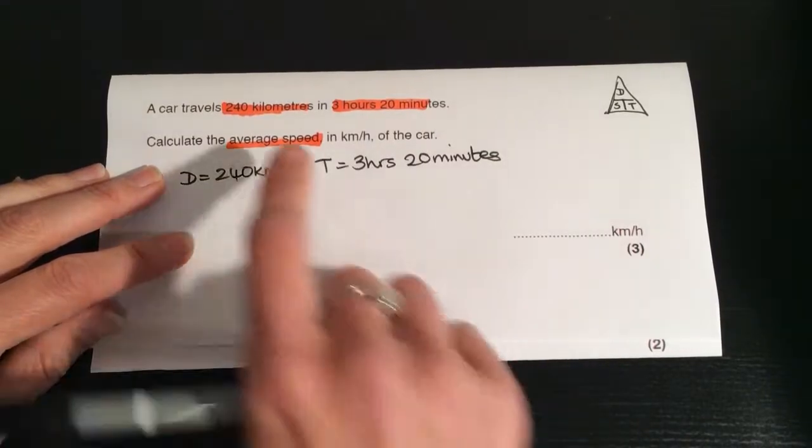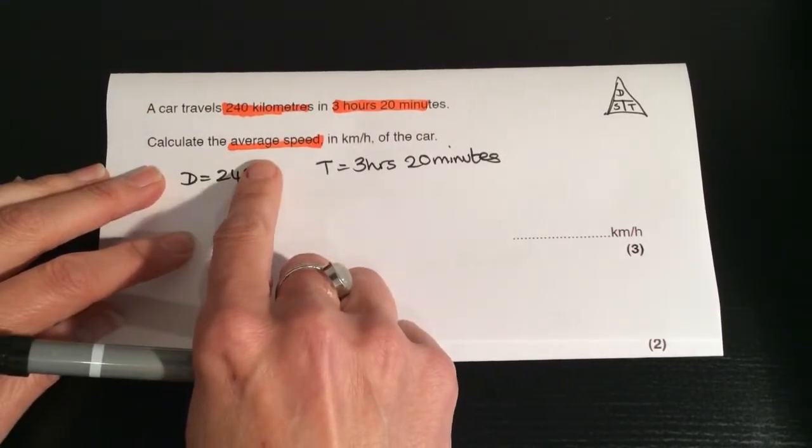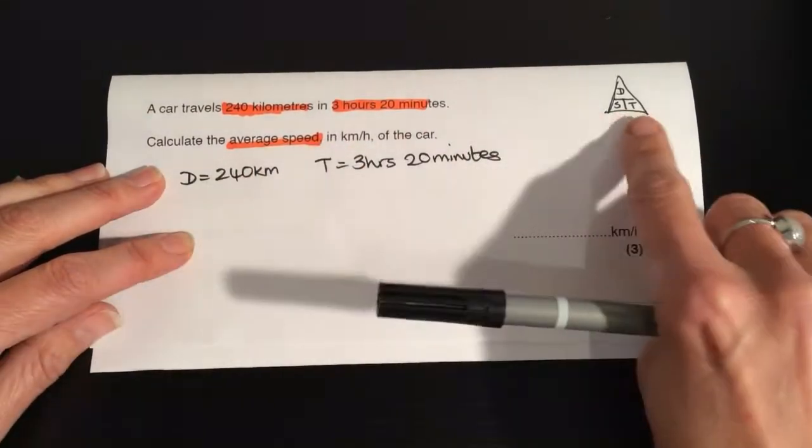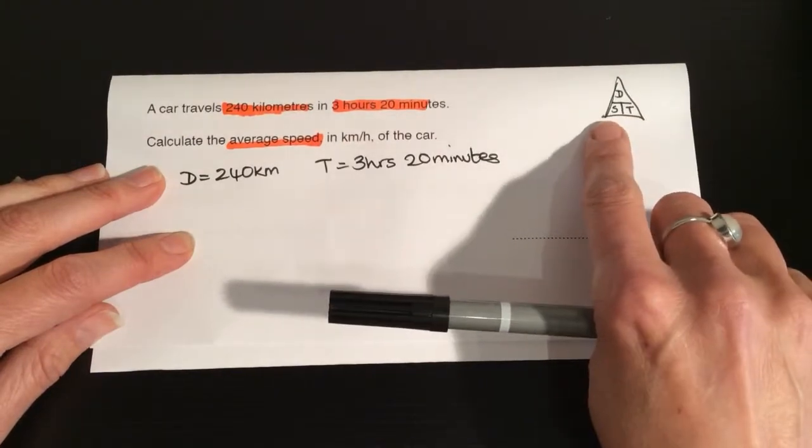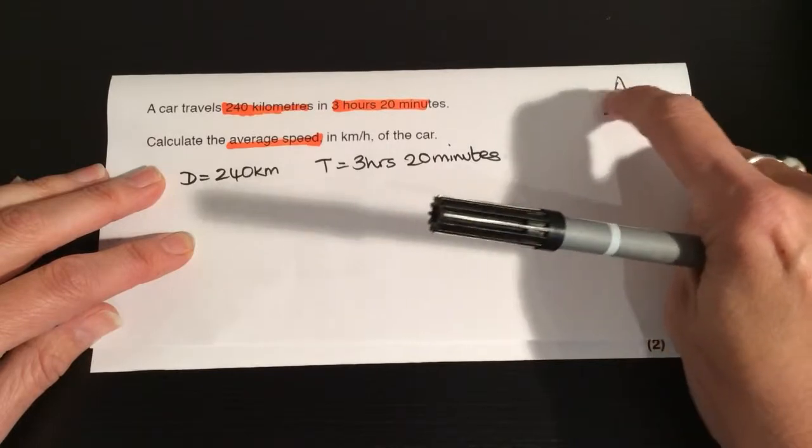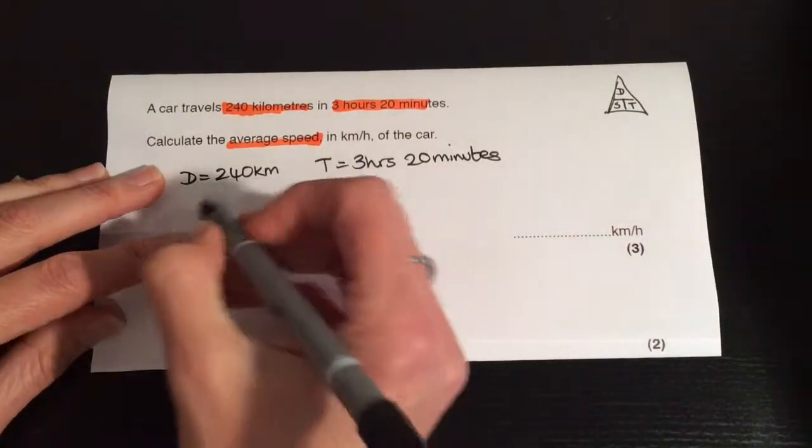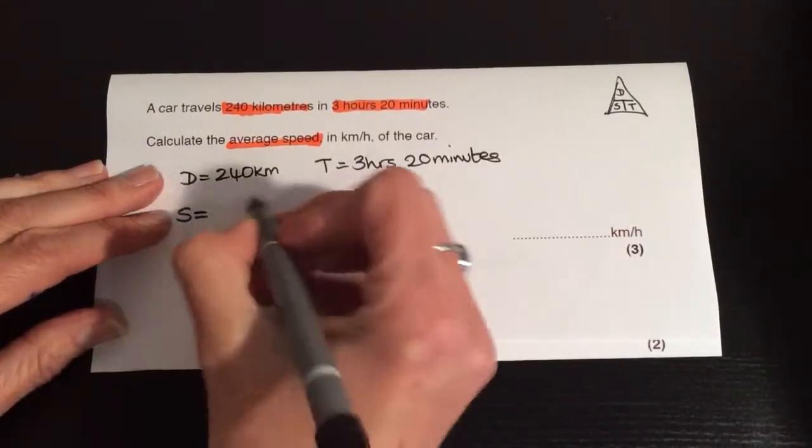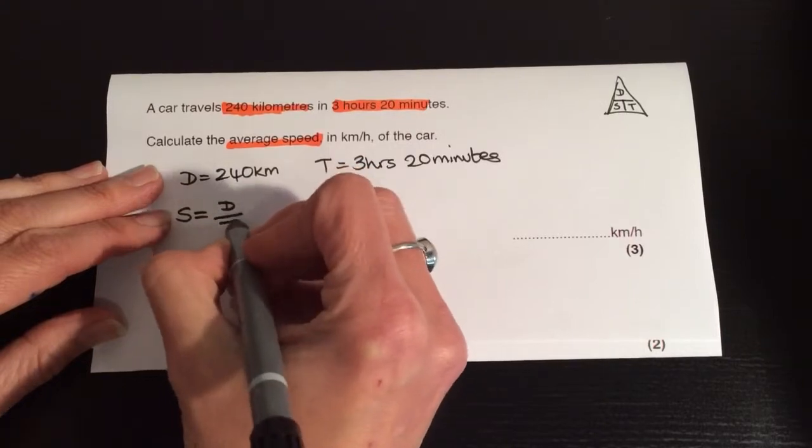Now we need to work out the average speed. So if we have a look over here, the speed is down at the bottom. So the speed is the distance over the time. Let me write that out. Speed is the distance over the time.